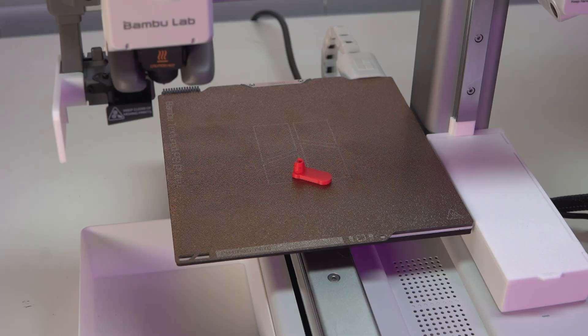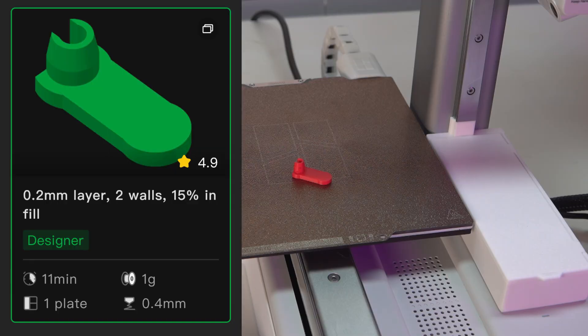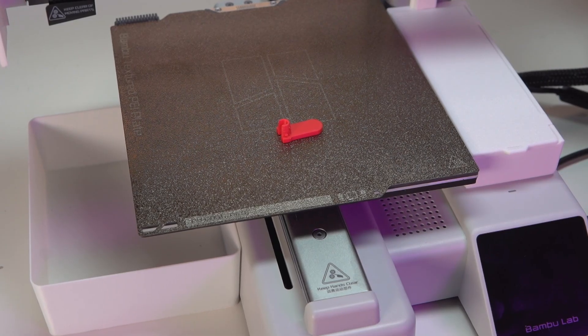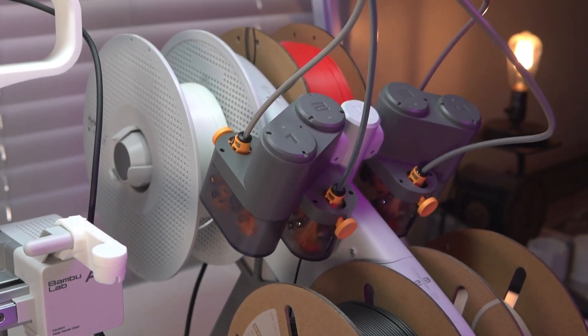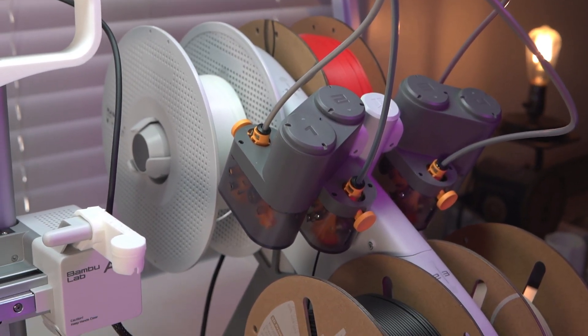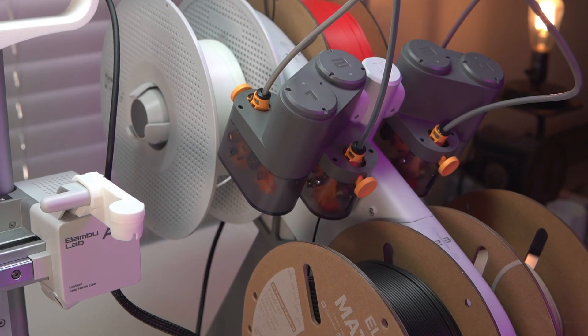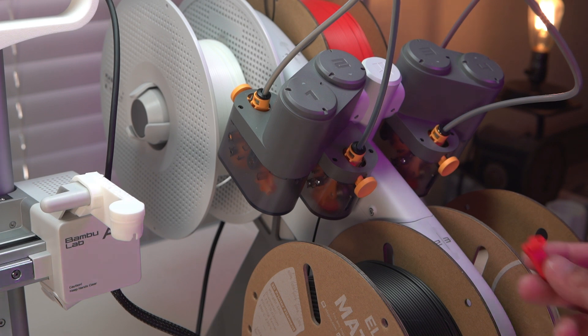This next modification or tool in this case is going to take you 11 minutes to print and again only one gram of filament. Now it may not be very obvious what this thing does just yet, but if we head over to some of the Bowden tubes, things might become a little bit more clear. Sometimes these Bowden tubes can be a real struggle to get out if you need to change them out or remove the AMS system for whatever reason.